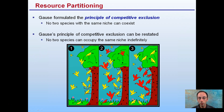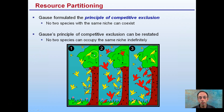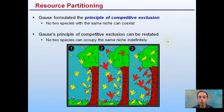The principle of competitive exclusion can be restated as: no two species can occupy the same niche indefinitely. Here we have yellow birds occupying the ground, the trunk of the tree, and the top portion. Then red birds move in, there's competition, and we notice now that the yellow birds are located at the very top of the tree and on the ground, while the red birds are occupying the trunk of the tree. This is an example of competitive exclusion as part of resource partitioning.